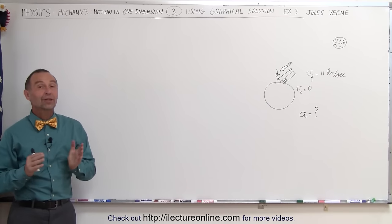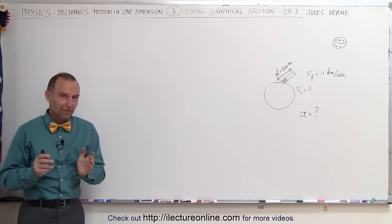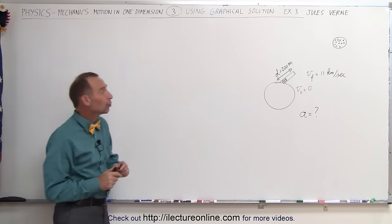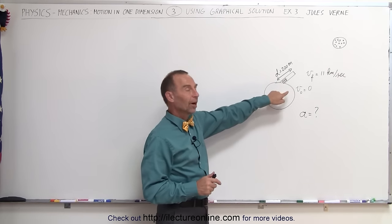Welcome to ElectronLine, and here's a very interesting problem for us to solve using a graphical method. Back in 1865, Jules Verne, a famous author mostly known for 20,000 Leagues Under the Sea, also wrote about attempting to shoot a space capsule to the moon using a cannon.